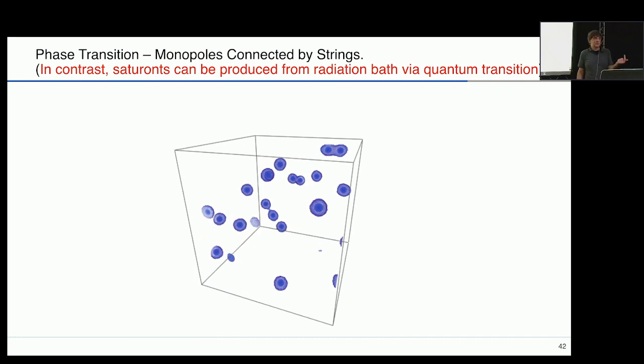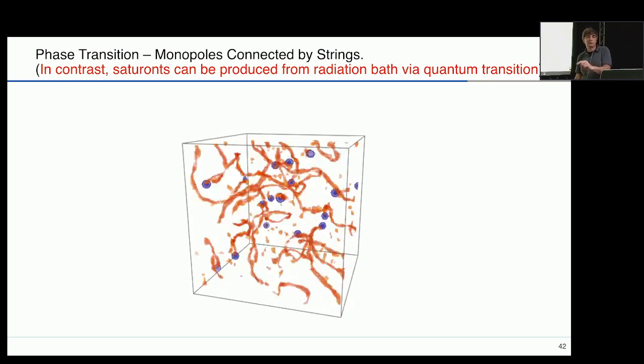Finally, saturated objects are also very important because they completely change the cosmological evolution of defects.